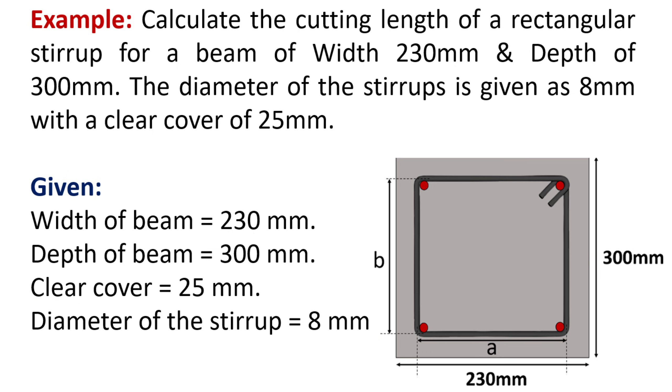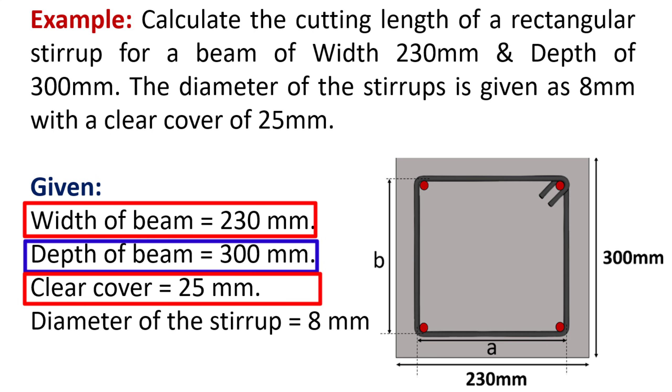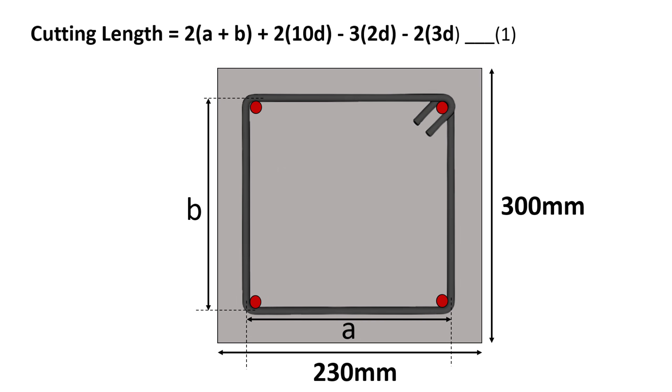So we have the given data: width of beam is 230 mm, depth of beam is 300 mm, clear cover is 25 mm, and diameter of the stirrups is 8 mm. The cutting length of a rectangular stirrup is calculated by